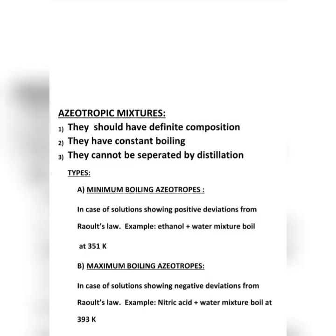Hello students. In this video let us see what are azeotropes or azeotropic mixtures. These are the liquid mixtures that have a constant boiling point because the vapor pressure has the same composition as that of the liquid mixture.